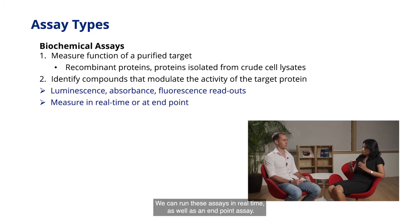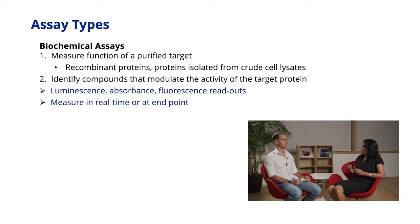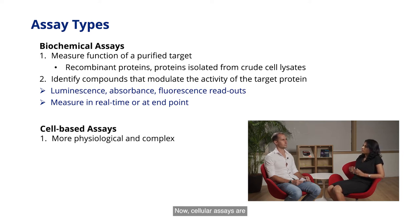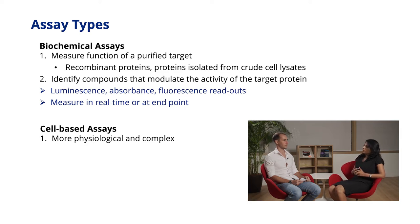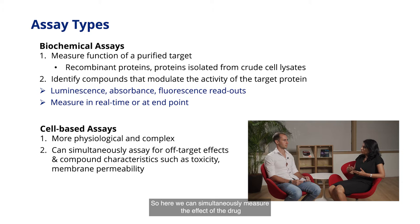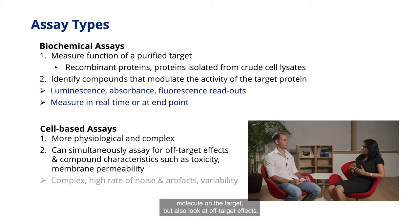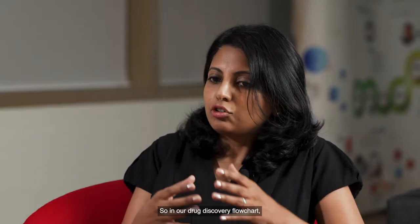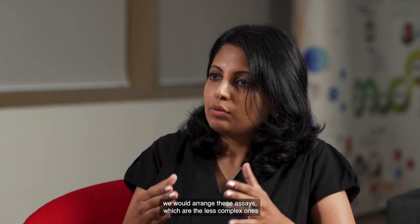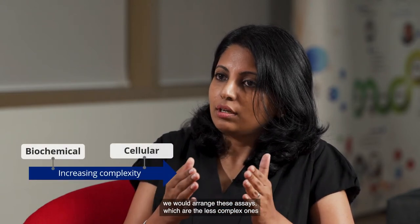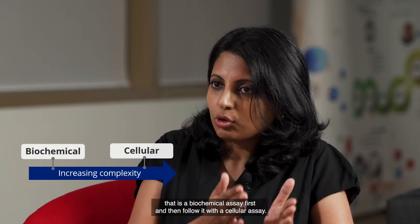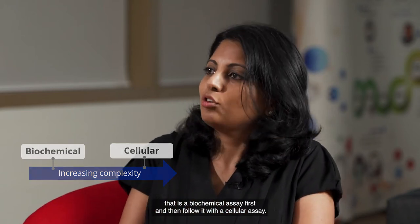We can run these assays in real time as well as endpoint assays. Cellular assays are physiological assays but they are much more complex. Here we can simultaneously measure the effect of the drug molecule on the target, but also look at off-target effects. We can also measure the permeability of the compound as well as toxicity. In a drug discovery flowchart, we would arrange these assays with the less complex ones — the biochemical assays — first, and then follow with a cellular assay.